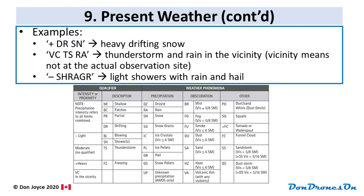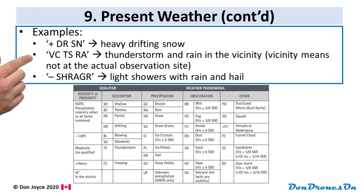Here are some more examples with the table at the bottom for reference. First: +DRSN means heavy drifting snow. Second: VCTSRA — TS and RA together mean thunderstorm with rain, and the VC qualifier at the beginning means it's in the vicinity but not at the actual observation site. Third: -SHRАГR — the minus sign means light, SH means showers, RA means rain, and GR means hail. So it's light showers with rain and hail.